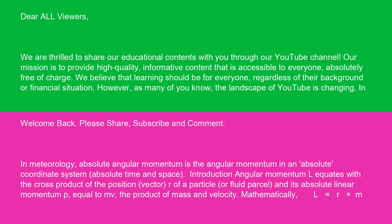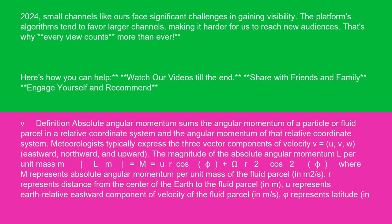Introduction: angular momentum L equates with the cross-product of the position vector r of a particle or fluid parcel and its absolute linear momentum P, equal to MV, the product of mass and velocity. Mathematically, L equals r times MV. Absolute angular momentum sums the angular momentum of a particle or fluid parcel in a relative coordinate system and the angular momentum of that relative coordinate system.